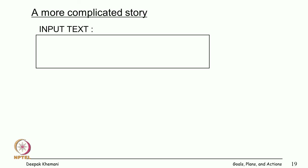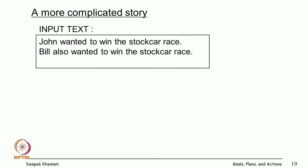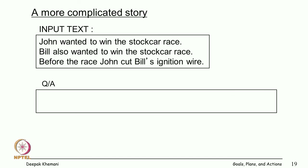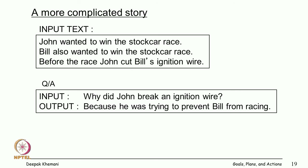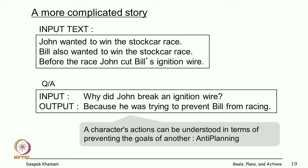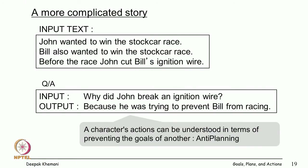Here is a slightly more complicated story relating to the foreman story. John wanted to win the stock car race; Bill also wanted to win. John, being an unsavory character, went and cut Bill's ignition wire. Why did John break the ignition wire? Because he was trying to prevent Bill from racing. A character's actions can be understood in terms of preventing the goals of others — as we saw with John punching Mary to watch football.